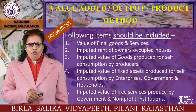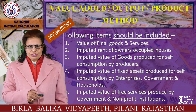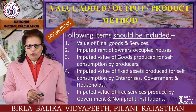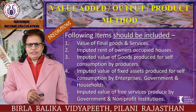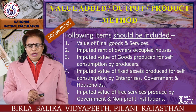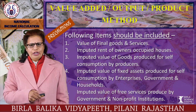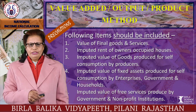Following items should be included in the value-added method: value of final goods and services; imputed rent of owner-occupied houses; imputed value of goods produced for self-consumption by producers; imputed value of fixed assets produced for self-consumption by enterprises, government, and households; and imputed value of free services produced by government and non-profit institutions.